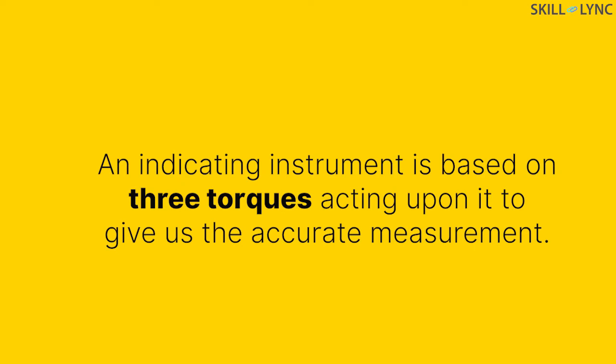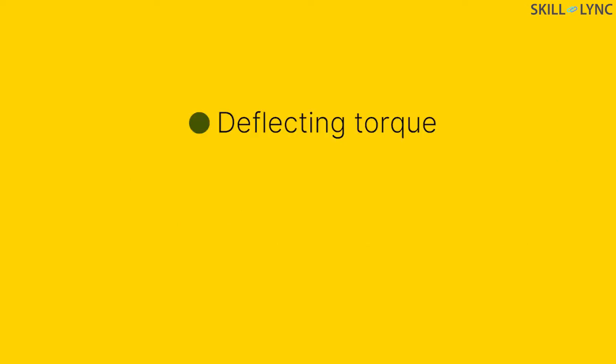An indicating instrument is based on three torques acting upon it to give us the accurate measurements. These are deflecting torque, control torque and damping torque.